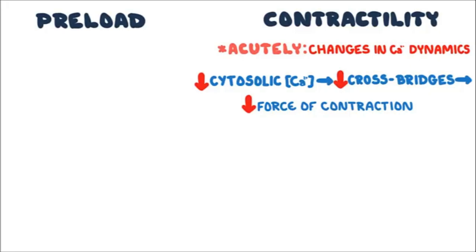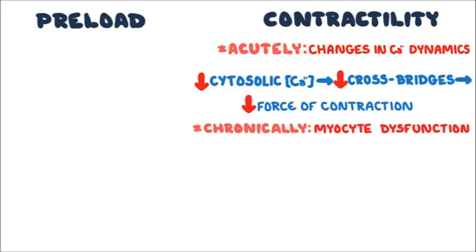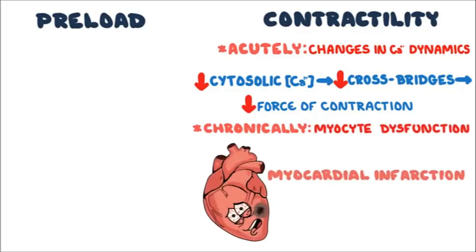Under chronic conditions, the change in contractility is due to other mechanisms. In low-output heart failure, the decreased systolic performance of the ventricle is due to myocyte dysfunction — for example, in the case of myocardial infarction.